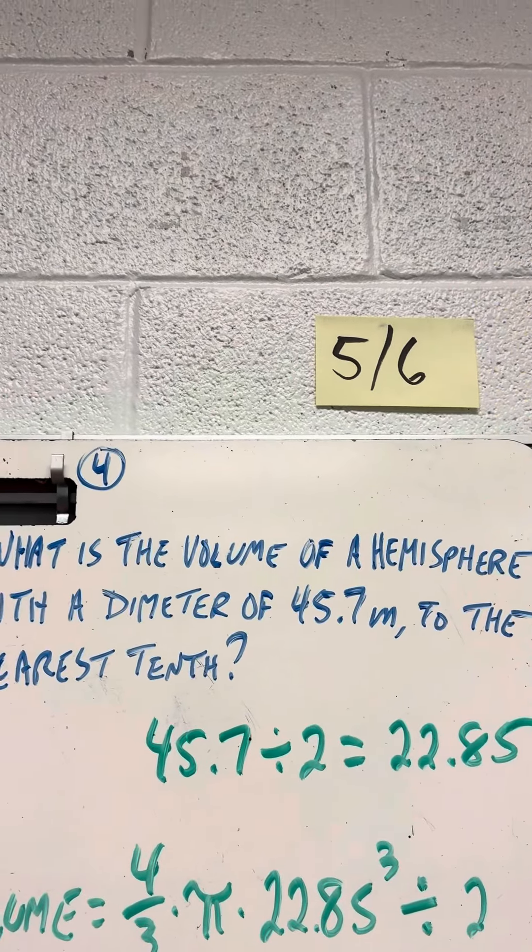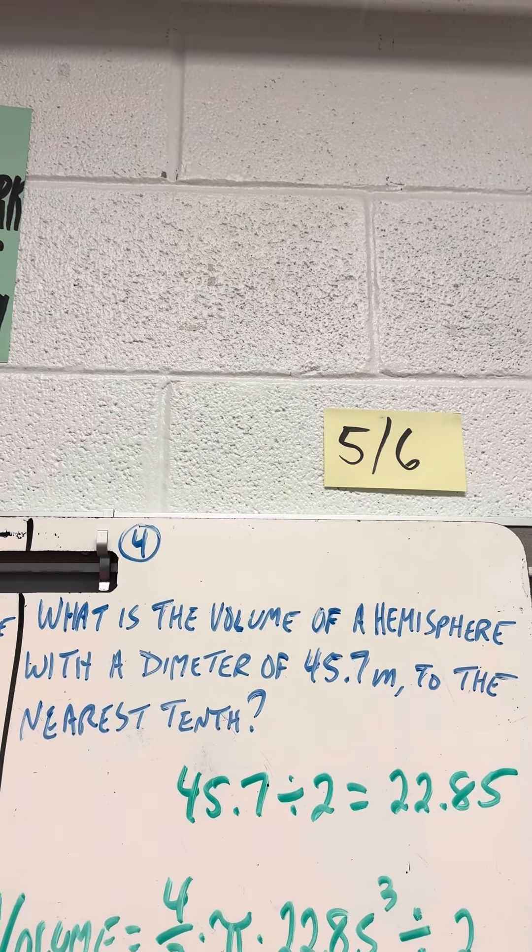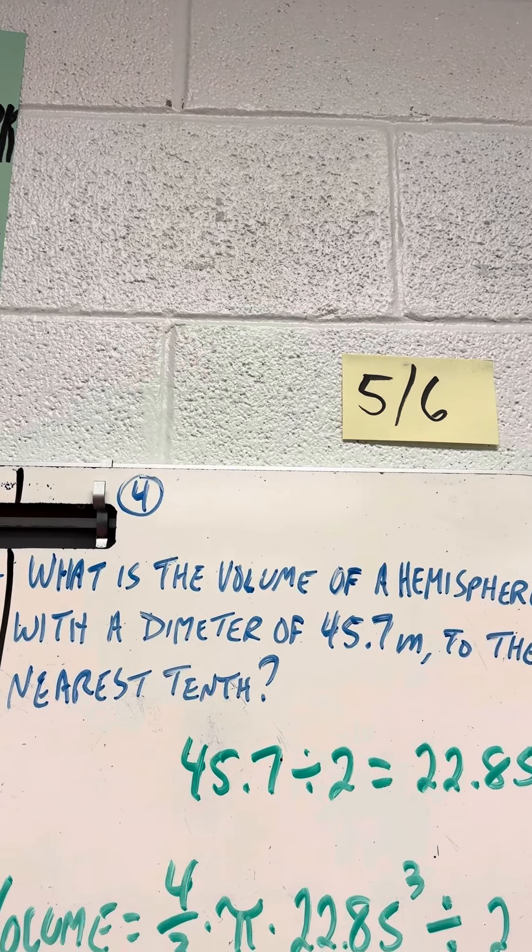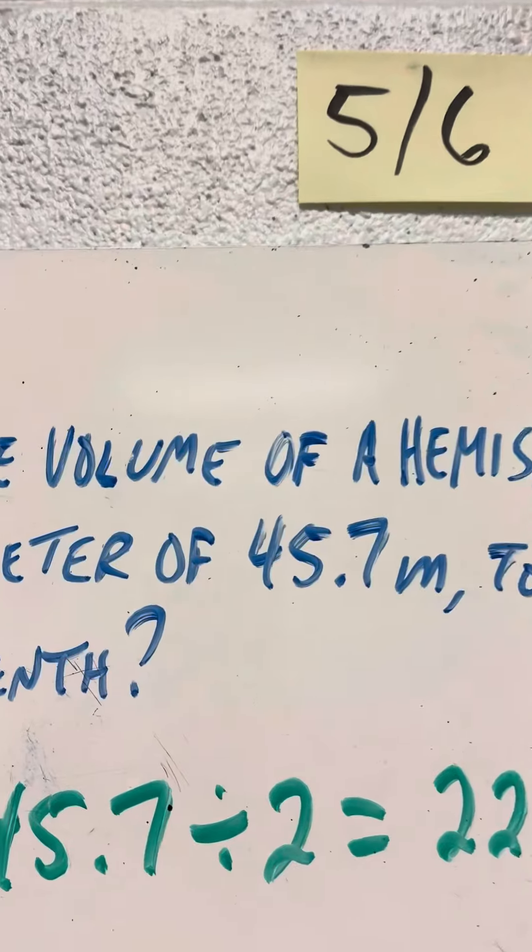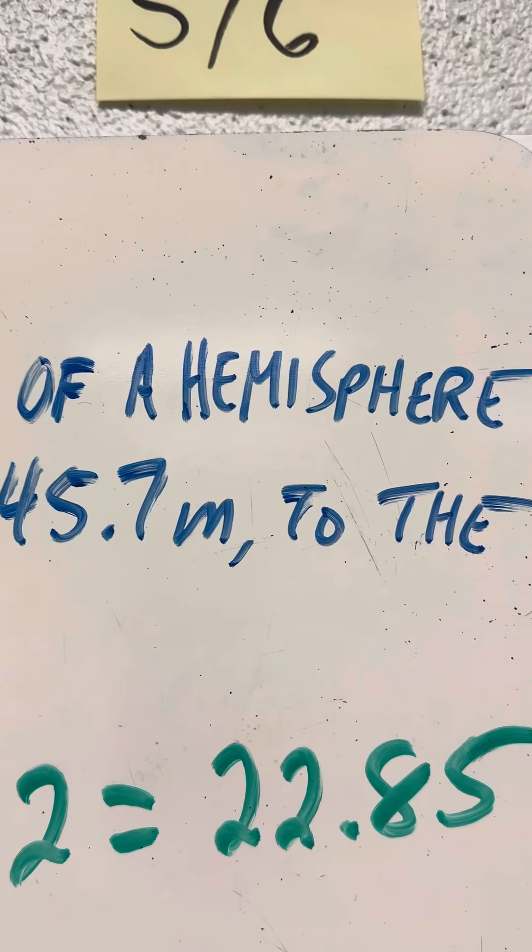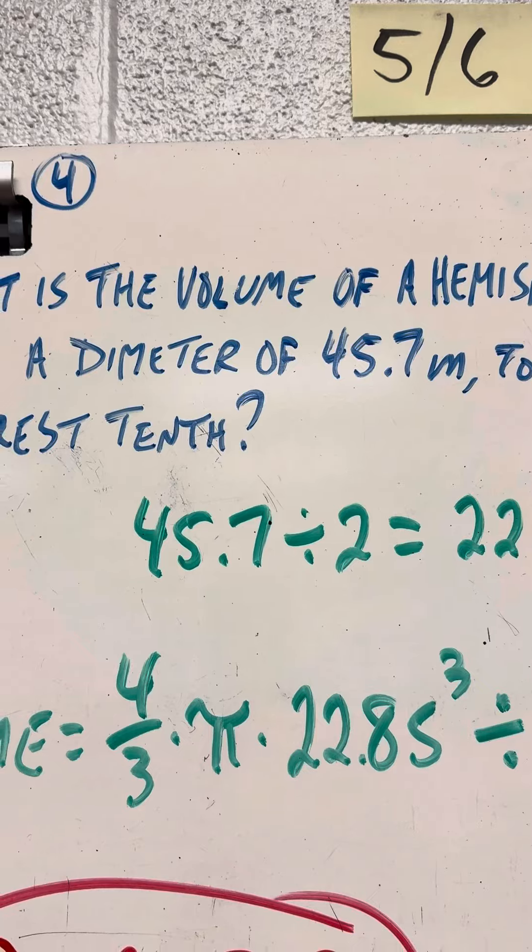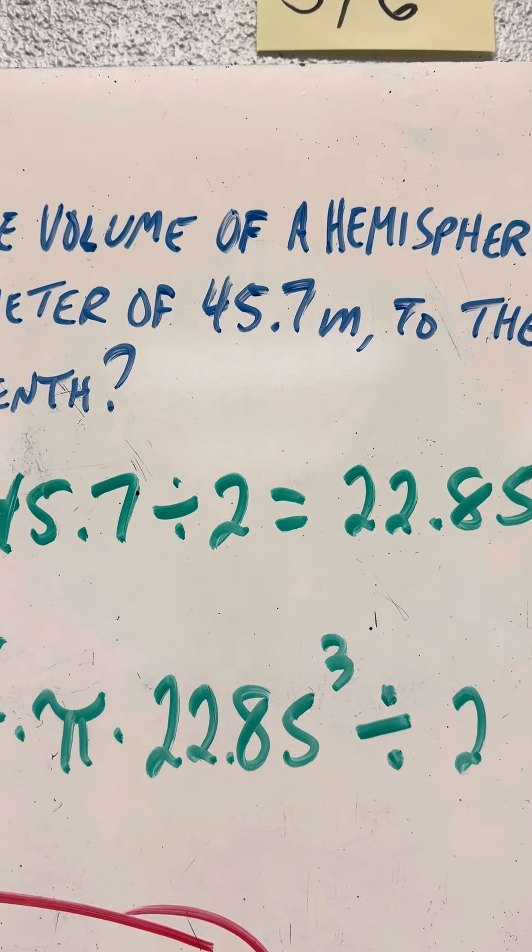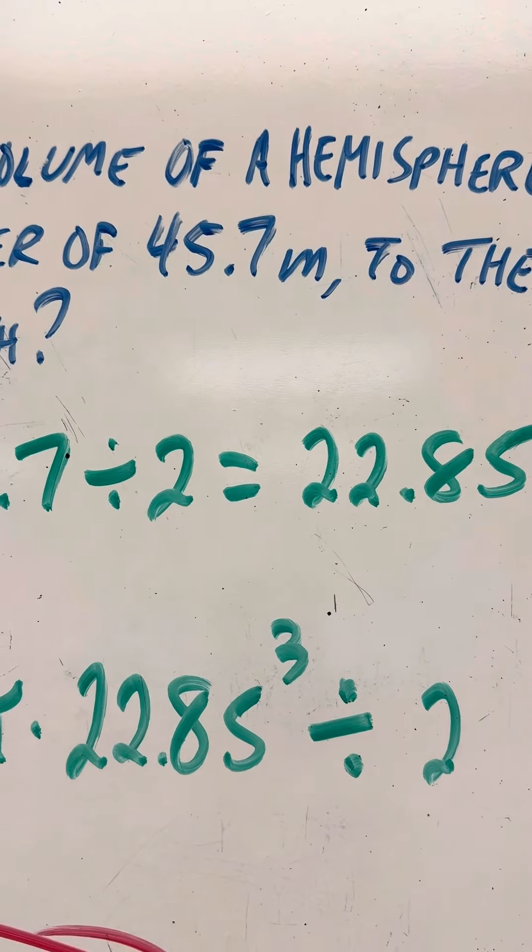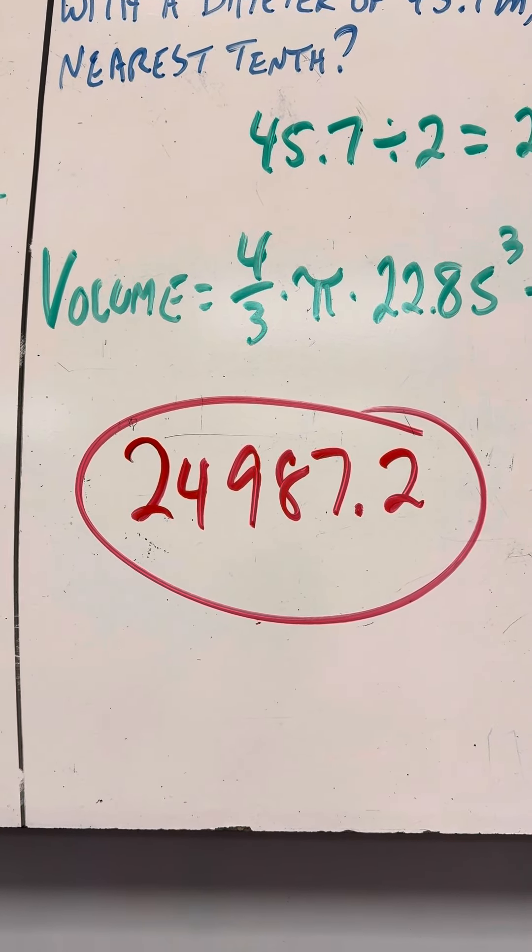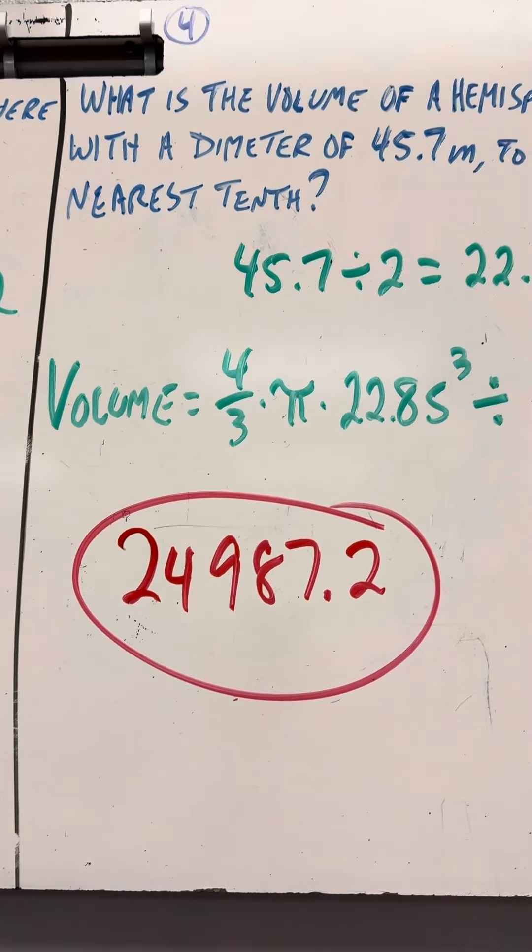What's the volume of a hemisphere with a diameter of 45.7? If the diameter is 45.7, you've got to divide that by 2 to get 22.85. So you do 4 divided by 3 times pi times 22.85 x to the third key. Divided by 2 equals 24,987.2.